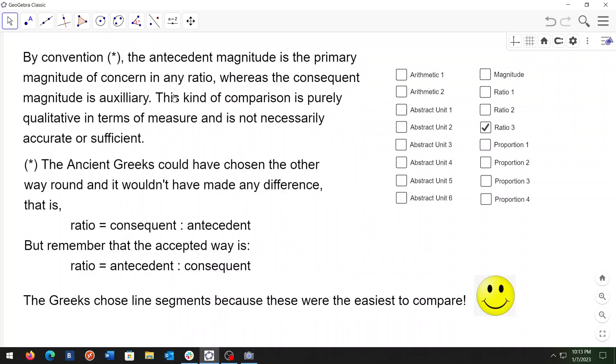By convention, the antecedent magnitude is the primary magnitude of concern in any ratio, whereas the consequent magnitude is auxiliary. This kind of comparison is purely qualitative in terms of measure and is not necessarily accurate or sufficient.